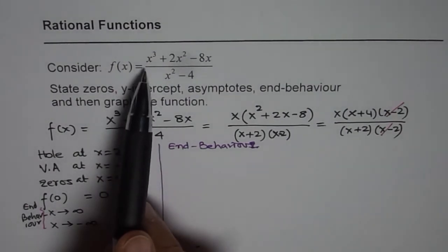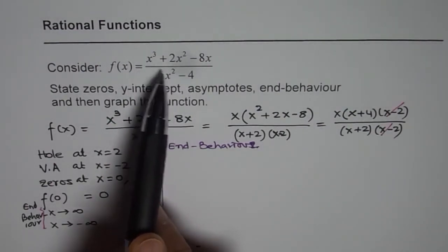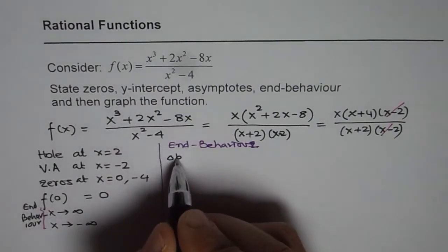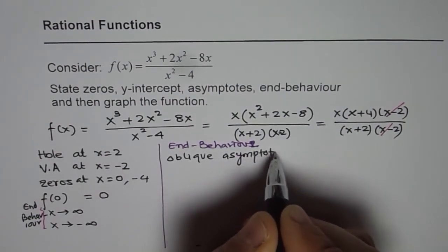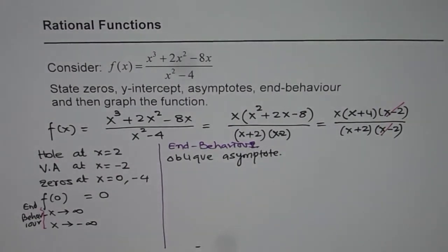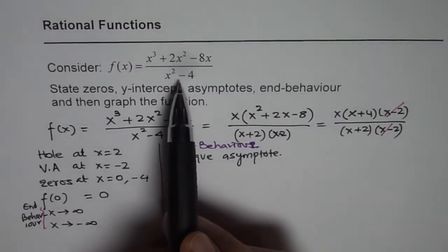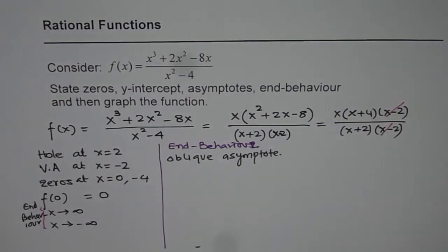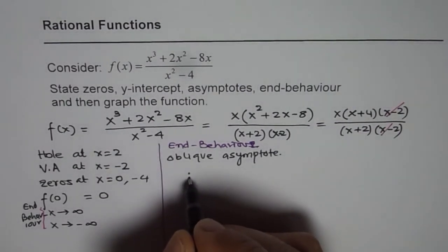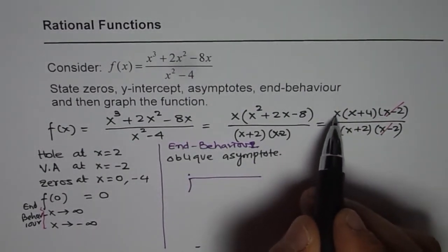End behavior is what happens when x is a very large positive or negative value. The degree of the numerator is x³ and that of the denominator is x², so the numerator is 1 degree higher. That means we expect an oblique asymptote. Now how do we find the equation of this oblique asymptote? We divide the numerator by the denominator. Since we have already simplified, let us do long division with the simplified version.